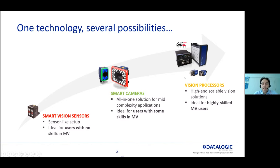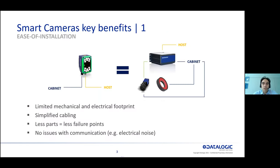As anticipated by the title, today we are going to focus on smart cameras. Before introducing the new product from Datalogic — the P2X series — I want to spend a few words about the typical key benefits of smart cameras compared to the other product types. The first benefit is that you have a complete vision system embedded in one single unit. Here you see a representation where on the left side the smart camera is one unit, typically featuring embedded lighting, embedded lenses, and embedded filters.